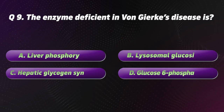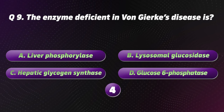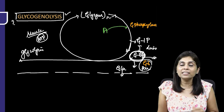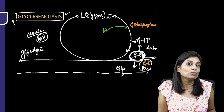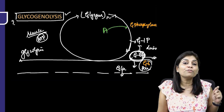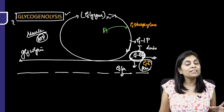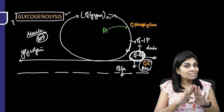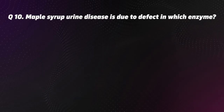Question 9. The enzyme deficient in Von Gierke's disease: A. Liver phosphorylase, B. Lysosomal glucosidase, C. Hepatic glycogen synthase, D. Glucose-6-phosphatase. The correct option is D, Glucose-6-phosphatase. Glucose-6-phosphatase is necessary for both gluconeogenesis and glycogenolysis to raise blood glucose. When it is defective in Von Gierke's disease, both pathways cannot increase blood glucose, causing severe hypoglycemia.